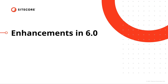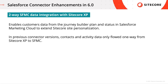Let's have a look at the enhancements introduced with Sitecore Connect for Salesforce Marketing Cloud version 6.0. In previous connector versions, contacts and activity data only flowed one way from Sitecore Experience Platform to Salesforce Marketing Cloud. In this new version of the connector, we're allowing for two-way data integration between Salesforce Marketing Cloud and Sitecore. This enables customer data from the journey builder plan and status in Salesforce Marketing Cloud to extend Sitecore site personalization.